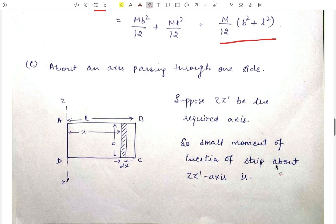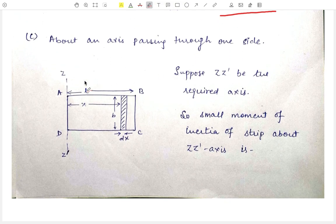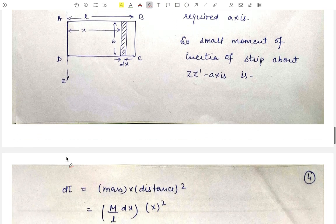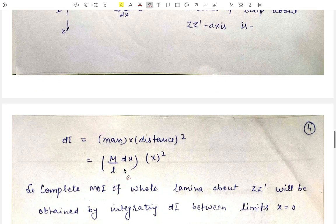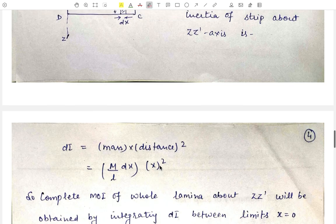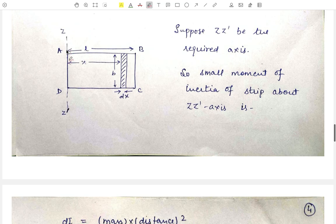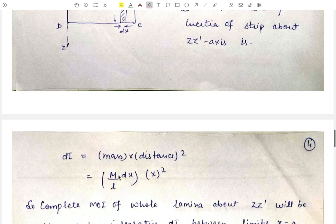Now our next case is to find out the moment of inertia about an axis passing through one of its sides, say side AD. The axis ZZ' passes through side AD and is the required axis. For this, we consider a small strip of thickness dx at a distance x from this ZZ' axis, as we have done in the first case. The small moment of inertia of this strip about ZZ' will be equal to mass into distance squared, that is (M/L)·dx · x².